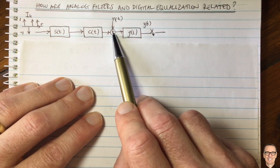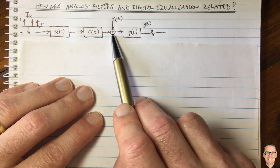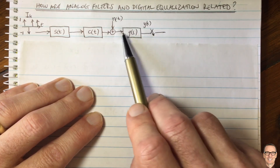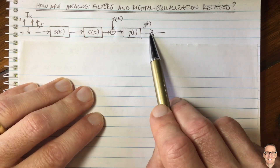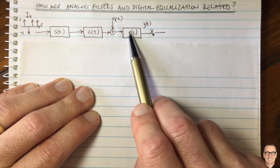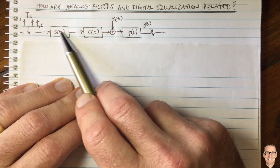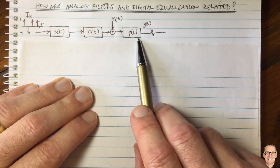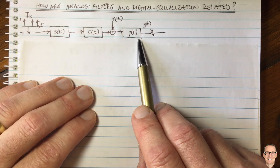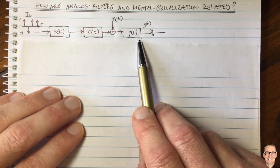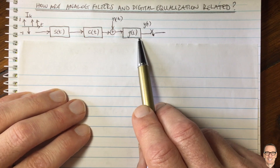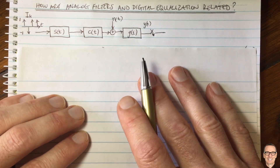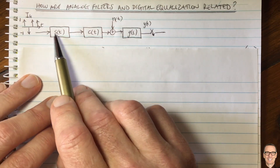Noise in the receiver is present in an additive way that you can't get rid of — it comes from electrons moving due to thermal noise. In the receiver you design a receiver filter which is then sampled, and you design this filter to collect the energy from the signal that relates to each of the different data symbols. For more information on that, there's a video on the channel on the matched filter.